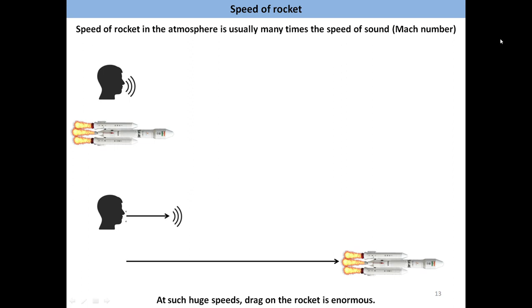The strength of aerodynamic drag that an object experiences is proportional to the square of its speed. Thus, when the speed of an object doubles, i.e., when it becomes two times, the strength of aerodynamic drag that it experiences will become four times. In the same way, when the speed of an object becomes 10 times, the strength of aerodynamic drag acting on it will become 100 times. So you can imagine how much aerodynamic drag will be experienced by a rocket that is moving at 5 times the speed of sound.